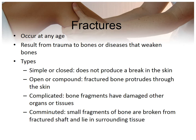Any child who has a fracture and is less than one year old needs to be evaluated for child abuse. Multiple fractures that are not the result of abuse or neglect could be indicative of osteogenesis imperfecta.